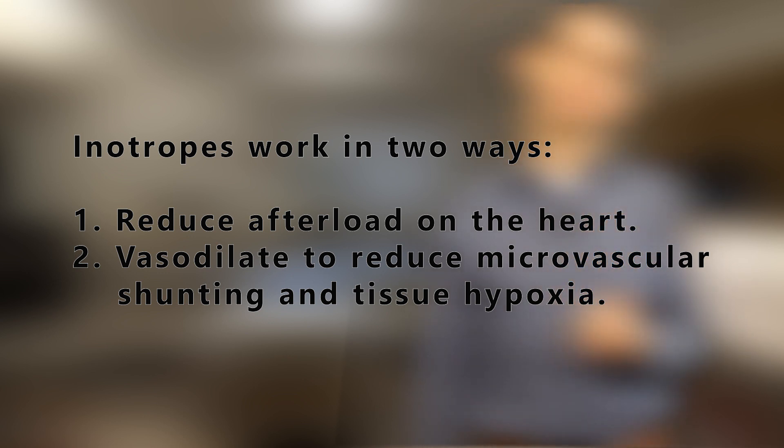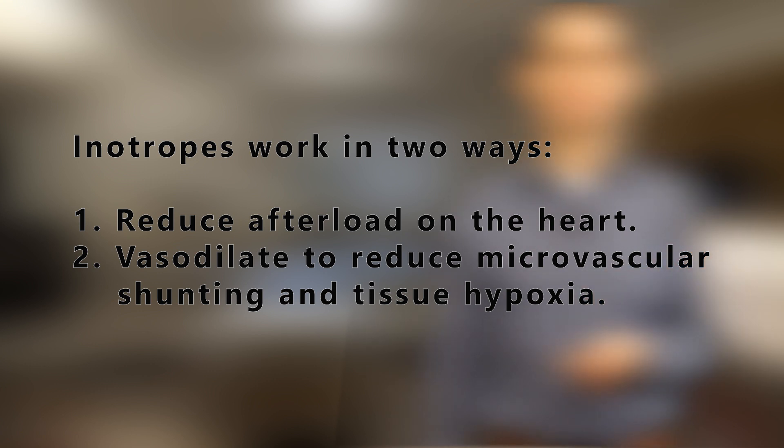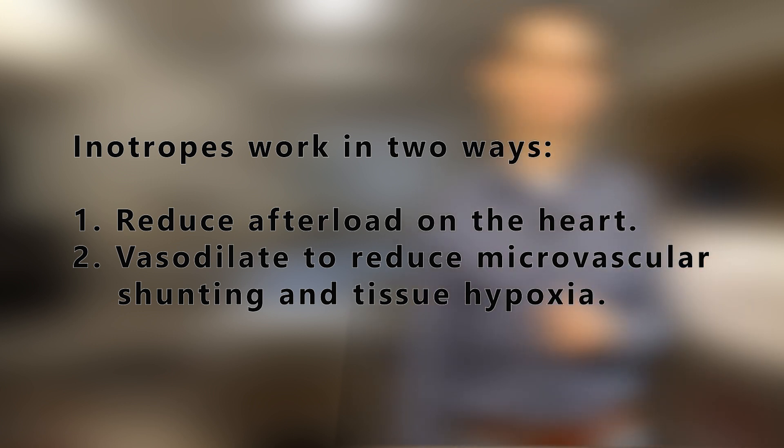Once you've resuscitated the intravascular space and relieved vasodilation, there may still be signs of shock. Inotropes may have a role, working in two ways: they reduce afterload and relieve myocardial depression, and they can cause vasodilation to reduce microvascular shunting and improve oxygen delivery. To determine whether to add an inotrope, get a central venous oxygen saturation — when it is below 75%, an inotrope can be tried. Finally, the story of steroids in sepsis is like a pendulum. Although adrenal deficiency in sepsis is real, the exact role of steroid replacement comes and goes. There may be benefit in replacement when patients have refractory shock or high vasopressor requirements, and steroids should always be replaced in patients with known preexisting adrenal insufficiency.